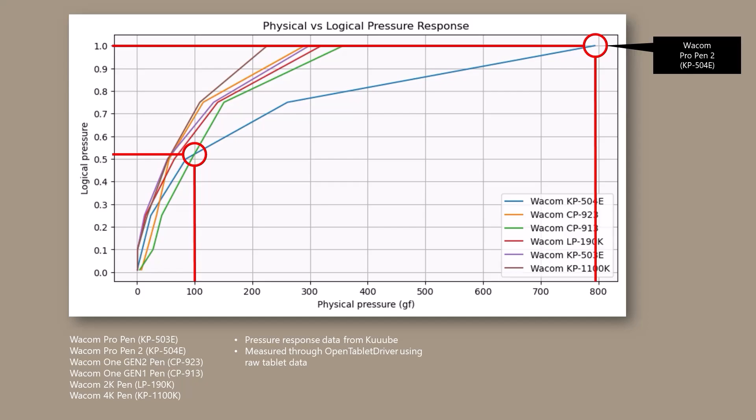That is, the first 100 gram force of the physical pressure range covers a lot of the logical pressure range. And the impact is this: for these pens, small changes in physical pressure at the lower end of the pressure range produce big jumps in logical pressure. And where this can show up in practical terms is, well, let's suppose you're using a brush where the pressure is mapped to the width of the stroke that you're making.